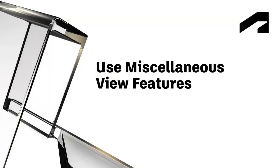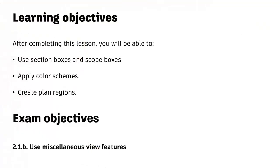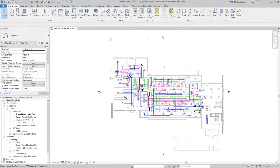In this video, we will cover using section boxes and scope boxes, applying color schemes, and creating plan regions. Let's begin by looking at section boxes. Section boxes are available in 3D views.